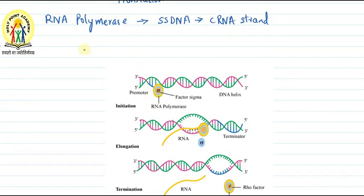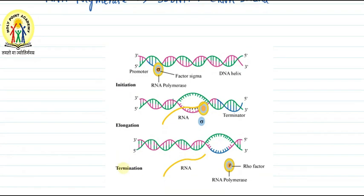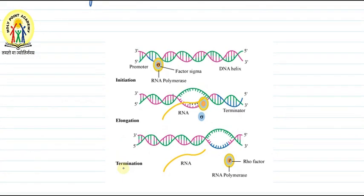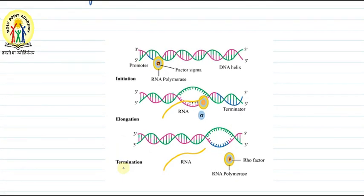The process of transcription occurs in three steps: initiation, elongation, and termination. These are the three steps of transcription.